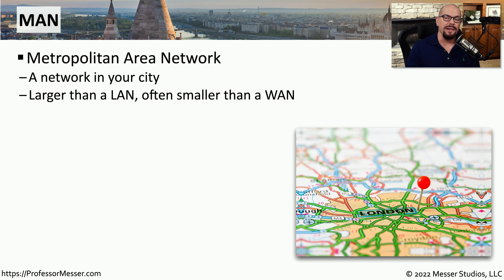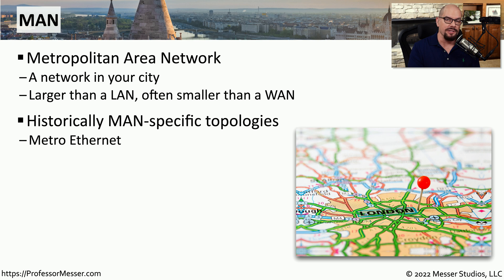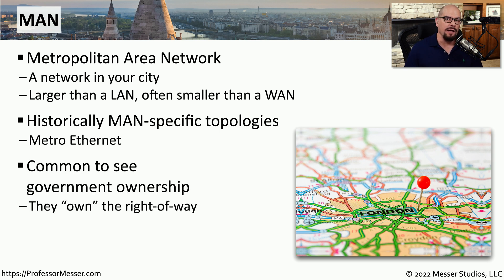If you work for a company that has many locations within the same city or geographical area, you may be connecting those sites together using a metropolitan area network or a MAN. The distances involved are much longer than what you'd find with a local area network, but not as far as a wide area network. This middle range is usually with locations in the same city. Today we commonly see Metro Ethernet, where you're given an Ethernet connection on both sides and the service provider provides the link between locations. Metropolitan area networks tend to be very common for governments, because they already have the right of way to put conduit in the ground and extend fiber connections between all of their remote sites.